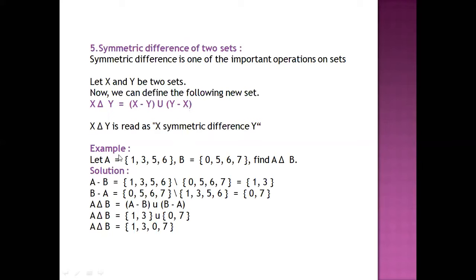For example, A = {1, 2, 3, 5, 6} and B = {0, 5, 6, 7}. Then we have to find A Δ B. A Δ B represents the symmetric difference of A and B. So first we calculate A minus B and B minus A, then take their union.